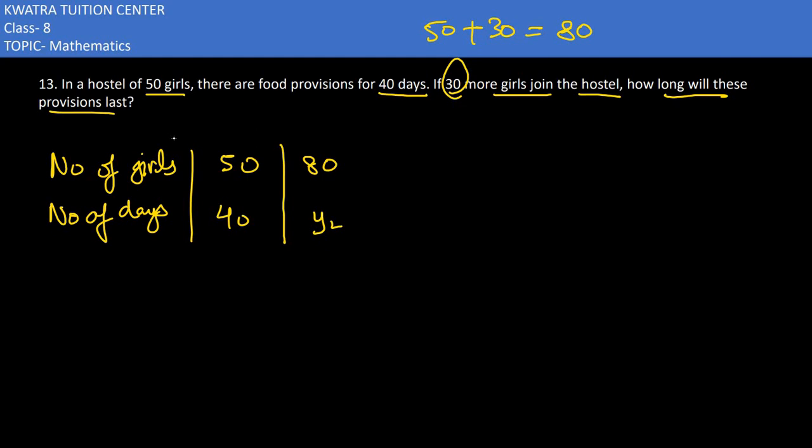From here we can understand if girls are increasing, number of days would decrease because food will get used up quickly. Therefore, this is a kind of inverse proportion. If one thing increases and the other decreases, this would be inverse proportion.